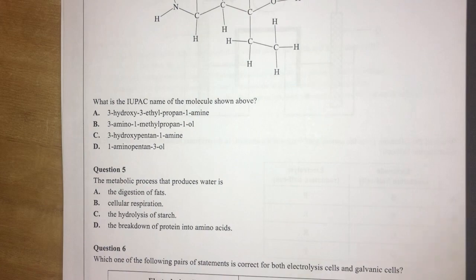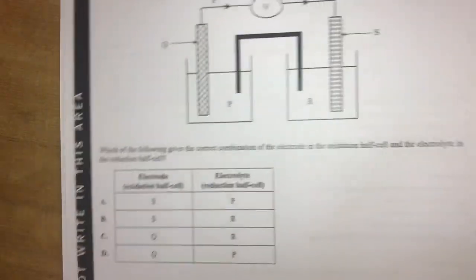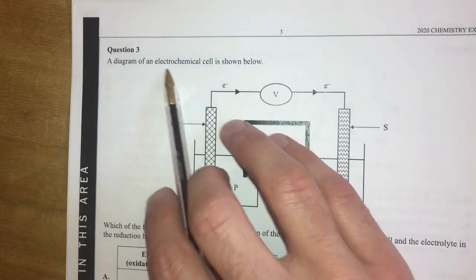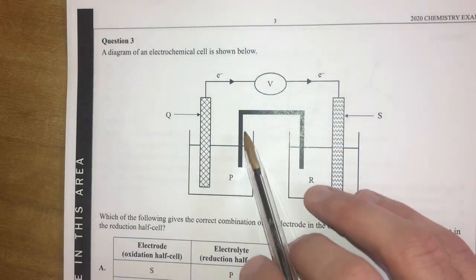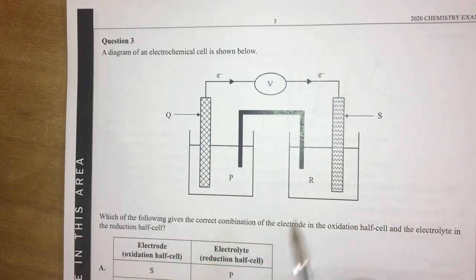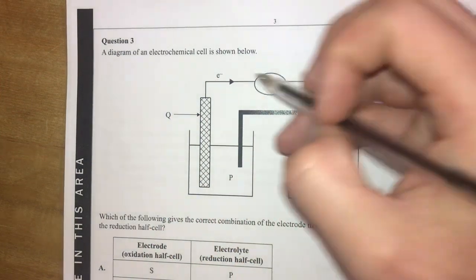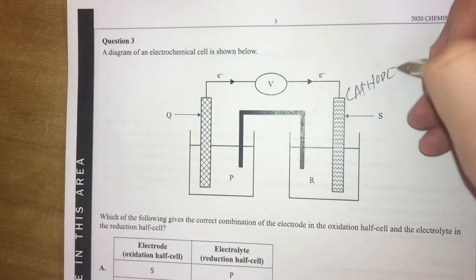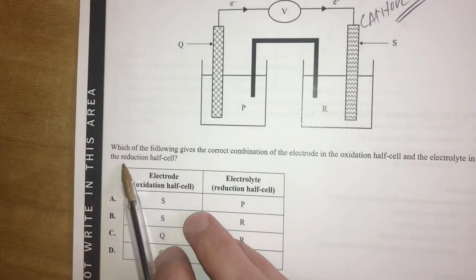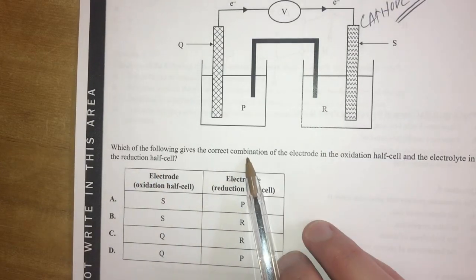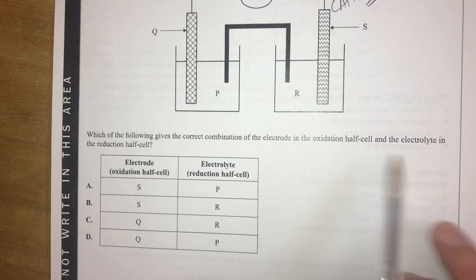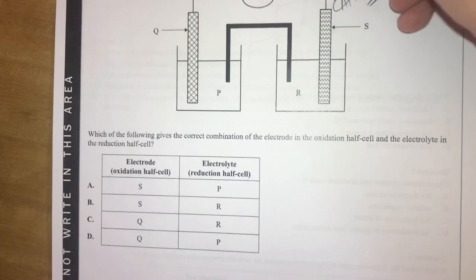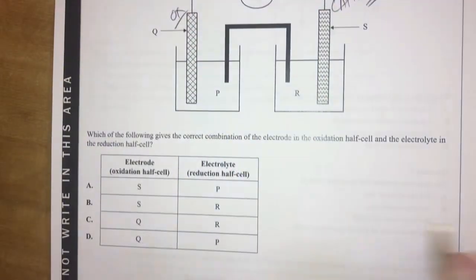Moving on to question three, which is here. A diagram of an electrochemical cell is shown below. This wouldn't be electrolytic. This is what looks like a salt bridge here, but we've got a direction of electron flow. What does that mean? That means the electrons are flowing towards the cathode here, so we can label that. Which of the following gives the correct combination of electrode in the oxidation half cell and electrolyte in the reduction half cell? So, being cathode here, this is reduction. That means this is oxidation over this side. So therefore, my electrode in my oxidation half cell would be Q.